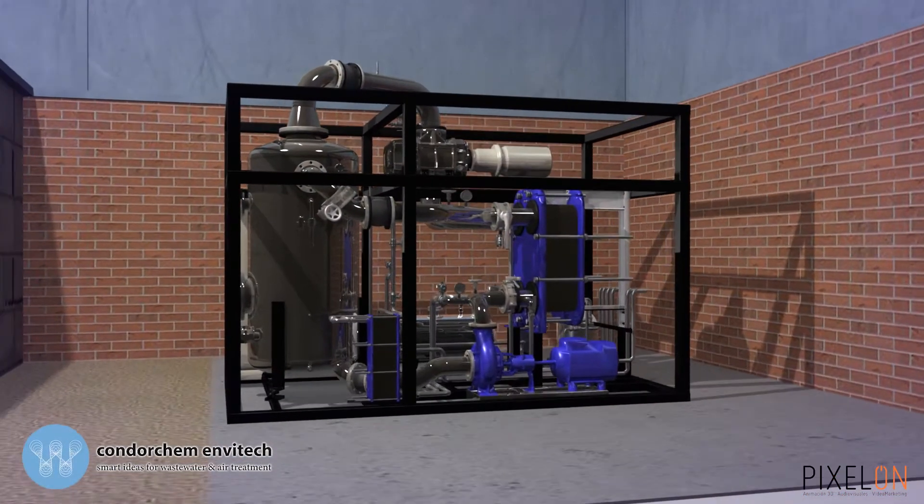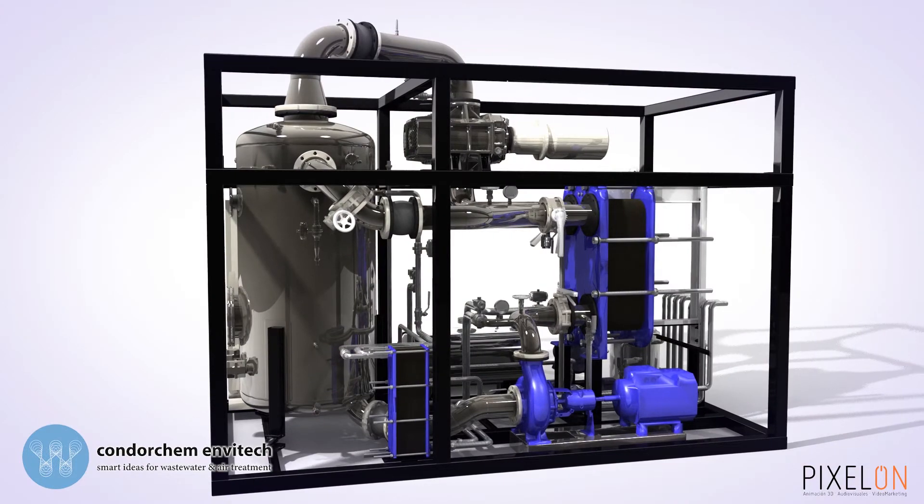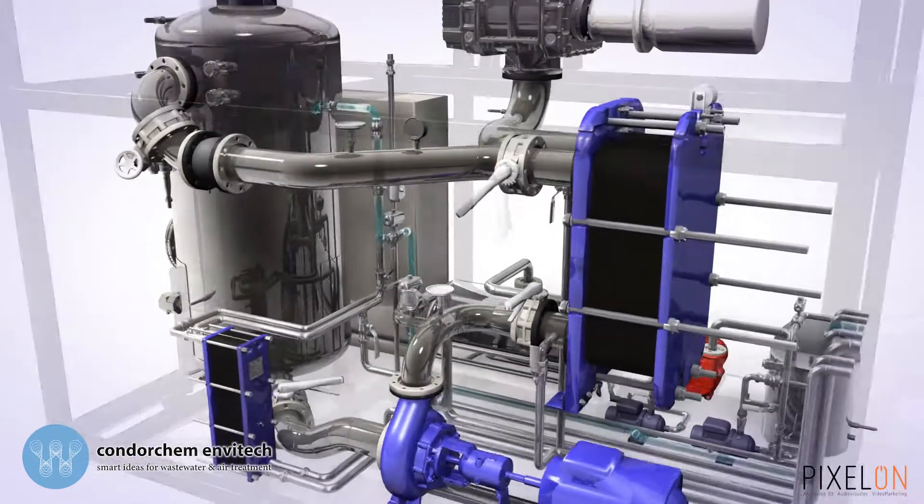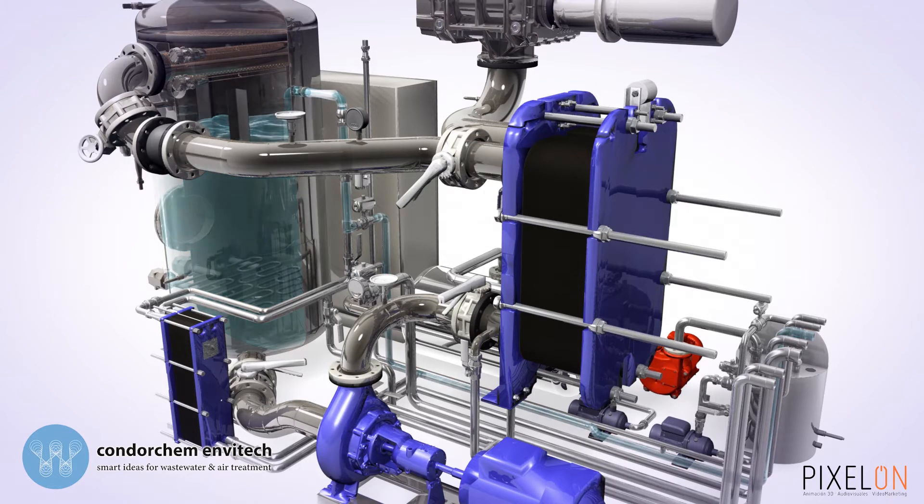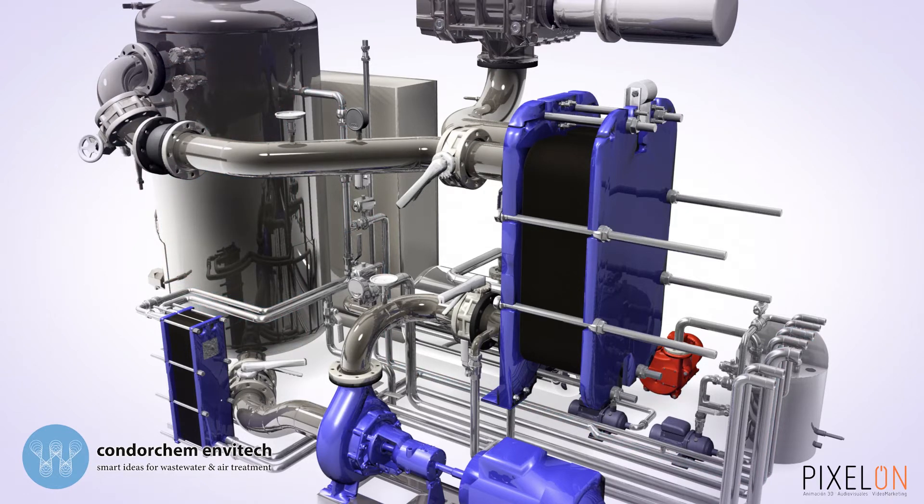When you turn the equipment on, the vacuum pump starts and the evaporator boiler fills up thanks to the vacuum, with values close to 600 mbar generated. Once the boiler is full,